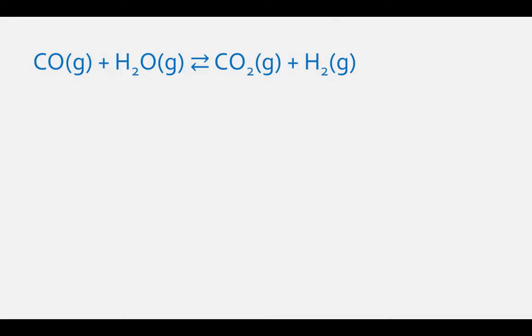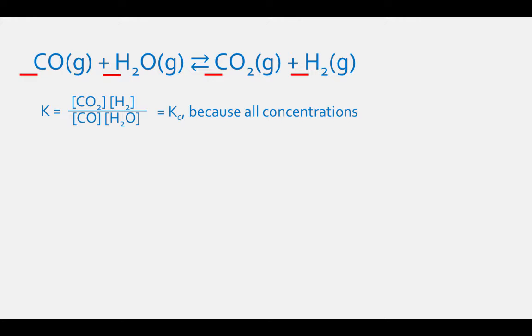For this reaction — CO gas plus H₂O gas in equilibrium with CO₂ gas plus H₂ gas — the equilibrium constant expression Kc equals the concentration of CO₂ times the concentration of H₂ divided by the concentration of CO times the concentration of H₂O. All of these concentrations are raised to the coefficients in the balanced equation, but they are all one, and we do not usually write when things are raised to the first power.